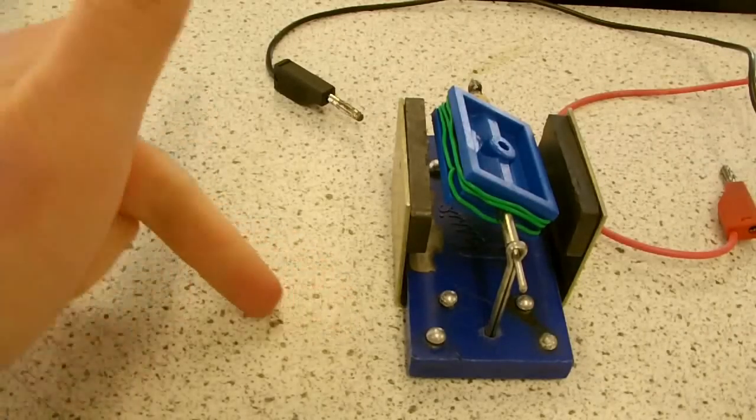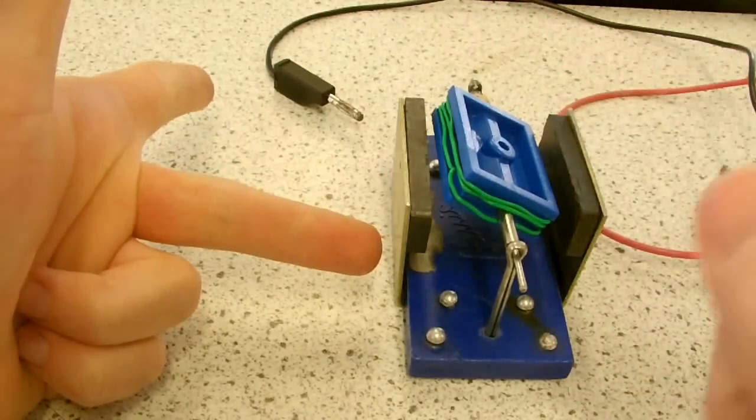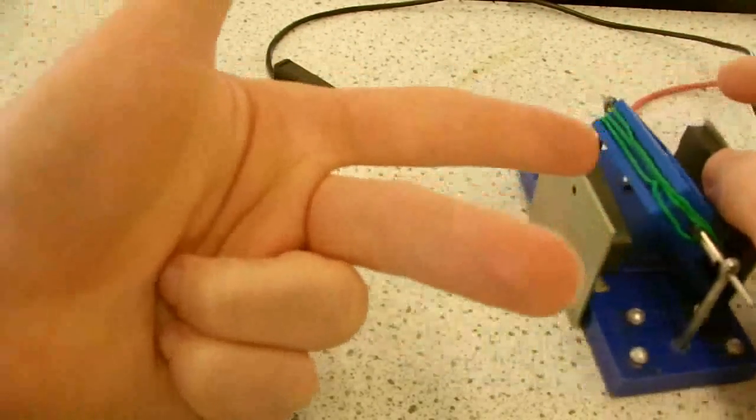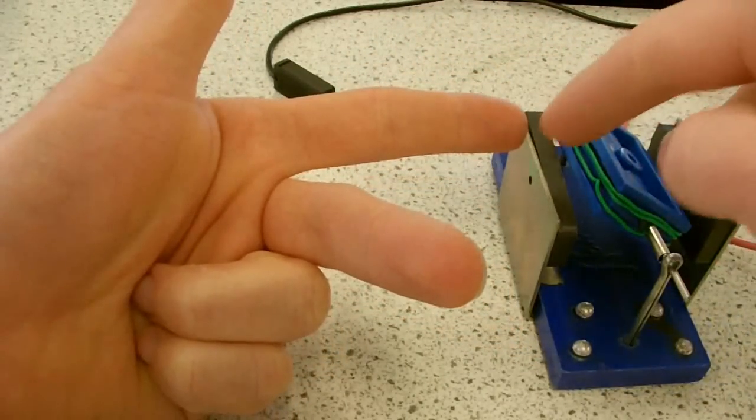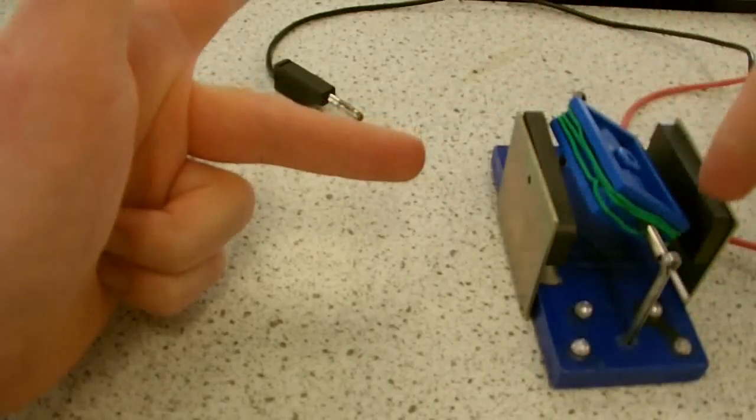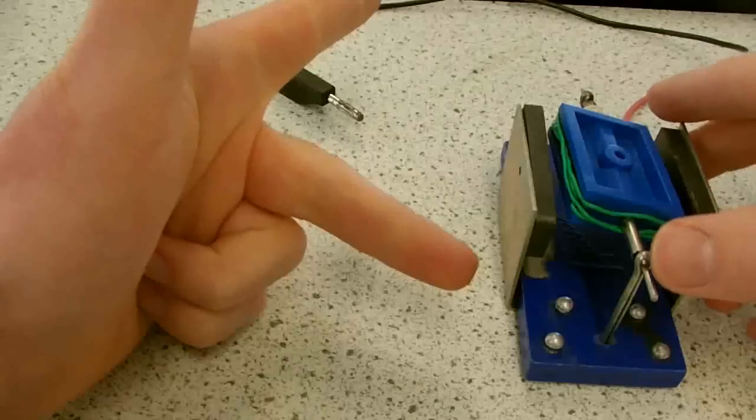Fleming's left hand rule helps us remember the directions in which the three quantities to do with the motor effect are organized. Now, you just need to remember what is on each finger. So the first finger, that is the magnetic field, whichever direction that magnetic field might be. The second finger, that's the direction of the current in the wire. And the thumb is the direction of the force.